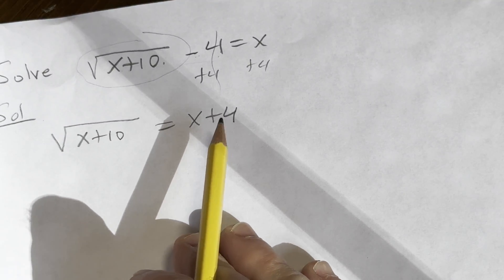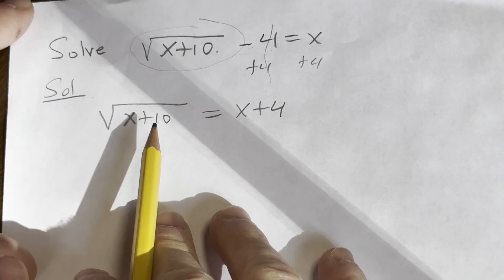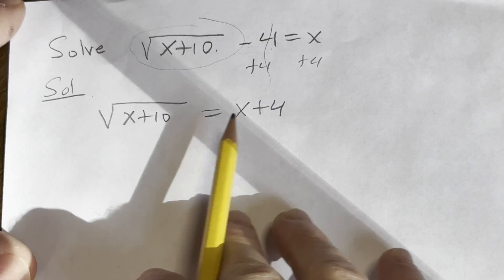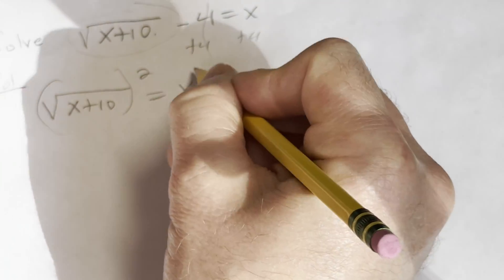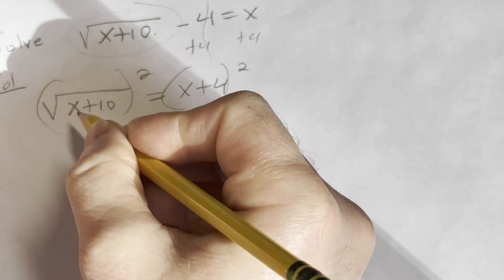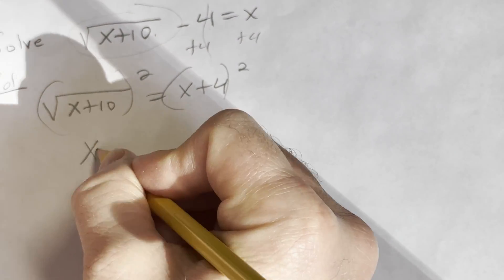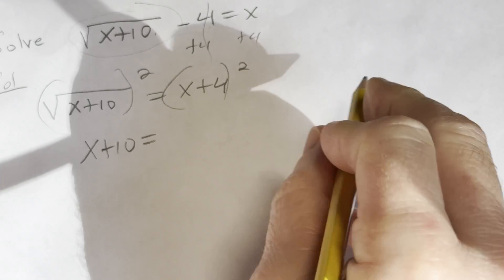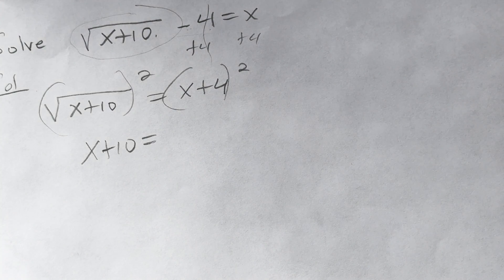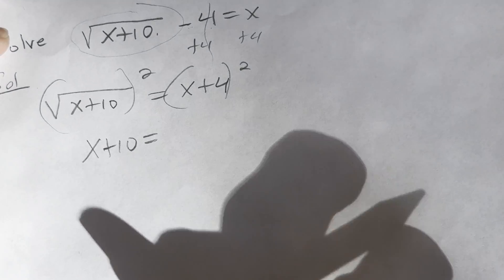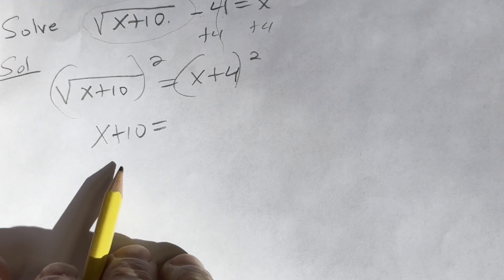So now we've isolated the square root. It's on one side by itself. Now what we can do is eliminate the square root by squaring both sides of this equation. There's a weird shadow here. Let me see if I can fix that for us. There we go. It's a light I have in the background. That's a little bit better. Still some shadows there, but that's okay.